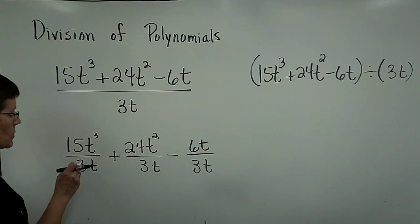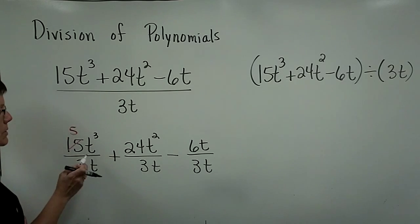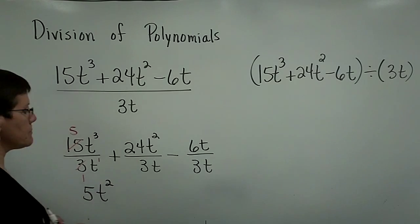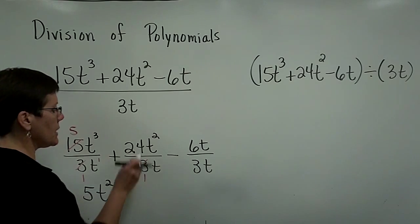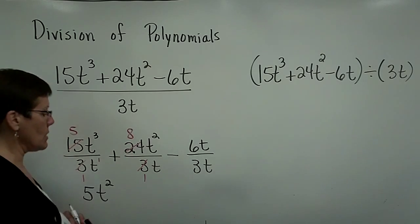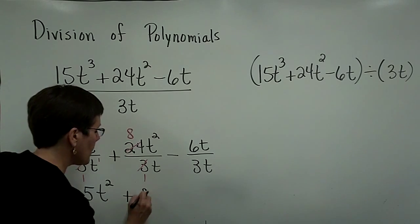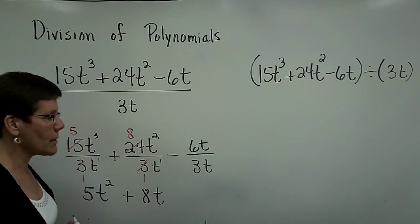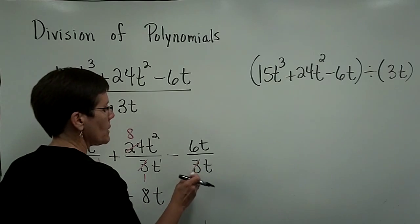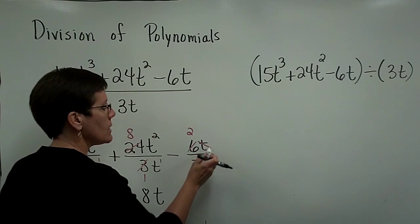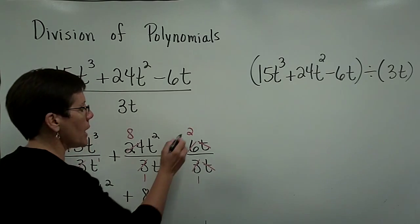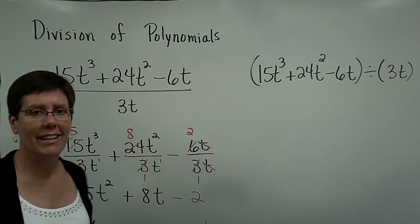So 3 goes into here once and into here 5 times. And t to the third divided by t to the first is t to the second. So you have 5 t squared. 3 divides into here once and into here 8 times. So you have an 8. And t to the second divided by t to the first is t to the first because I'm subtracting their exponents. And 3 goes into here once and into here twice. And t over t is equal to 1. The variable portion is gone. So I have left a minus 2 right there.